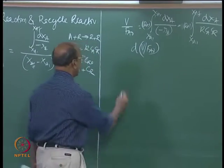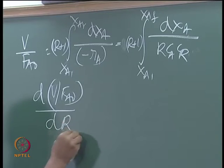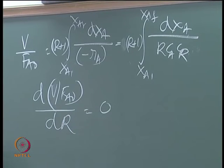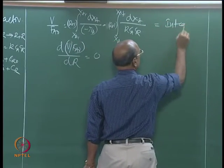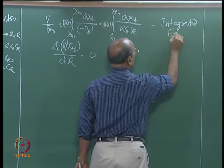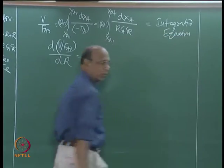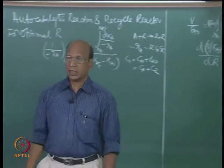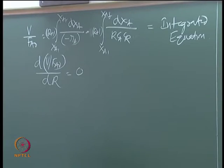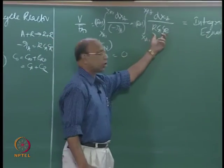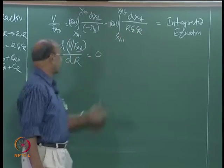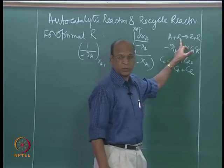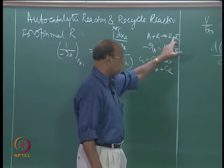You have to integrate and then take the first derivative equal to zero of that integrated expression. This will give you some integrated expression, and I am not giving it here. The analytical procedure is: first substitute — it need not always be K·CA·CR; it may be K·CA²·CR, depending on the order with respect to A and R.